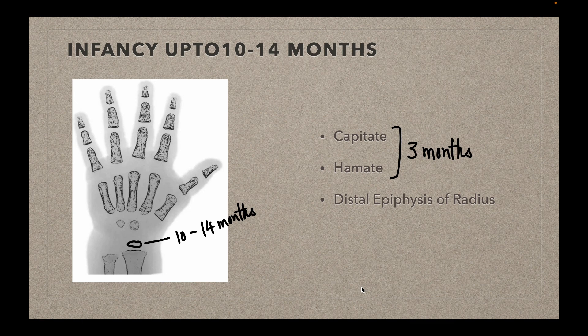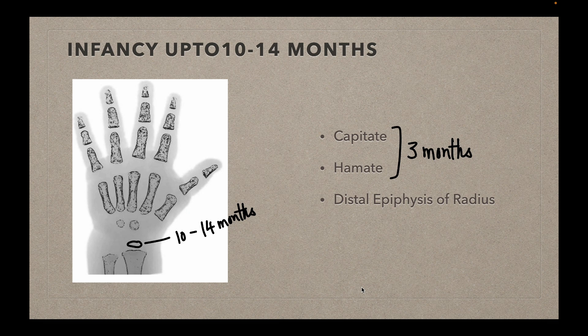The first stage is infancy, up to 10 to 14 months. In the x-ray of the hand and wrist, we look at three things. Two carpal bones develop almost at the same time — capitate and hamate — appearing at around three months of age, though capitate may develop slightly earlier than hamate by about half a month. The distal epiphysis of the radius appears at around 10 to 14 months. Where a range is mentioned, the lower limit corresponds to females and the upper limit to males, due to the effect of estrogen.